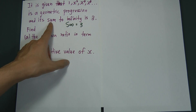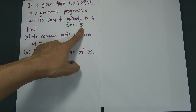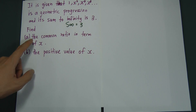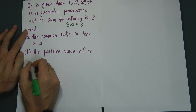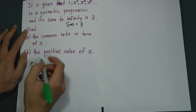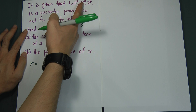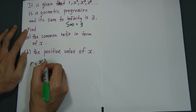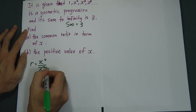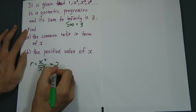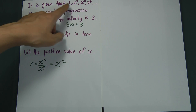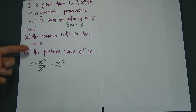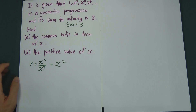Part A asks you to find the common ratio in terms of x. The common ratio r can be found by dividing the second term by the first term, or the third term by the second term — you get the same answer. Using the third term divided by the second term, after simplifying, I get x². So the common ratio r is x².